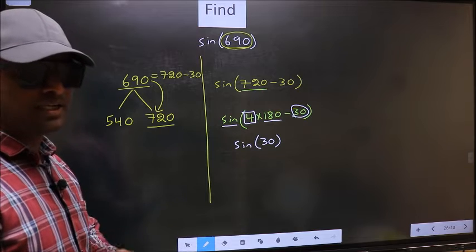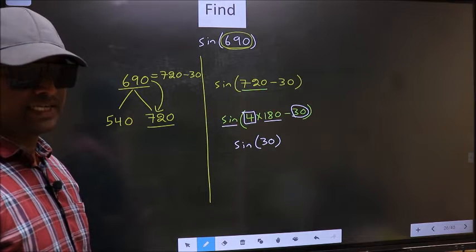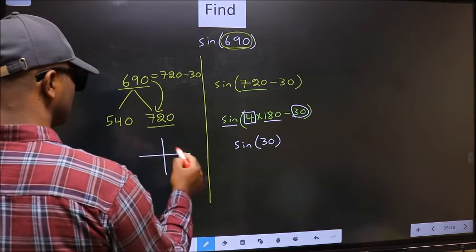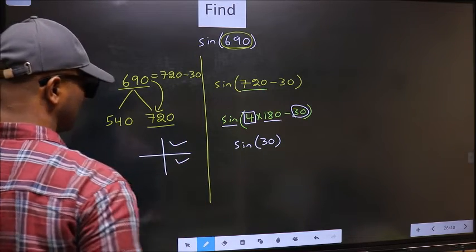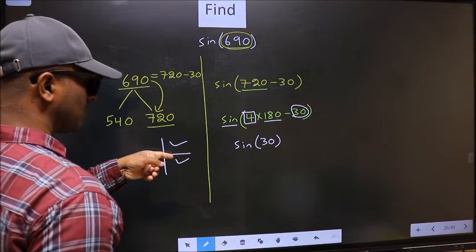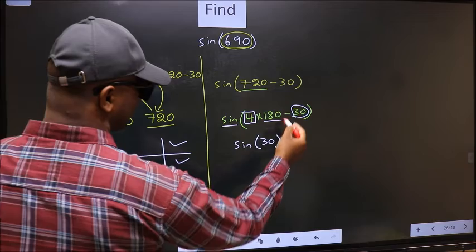And all the even multiples of 180, they lie either in the 1st or in the 4th quadrant. So now to select the quadrant, we should look at this symbol.